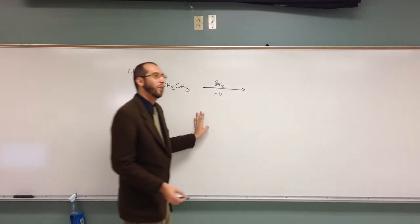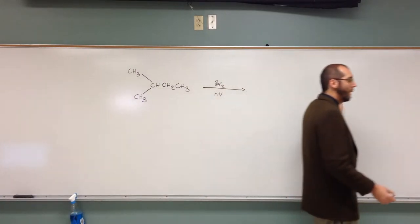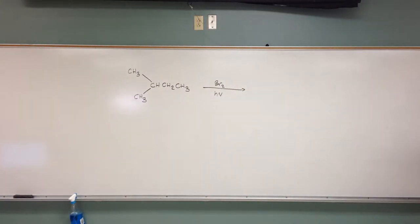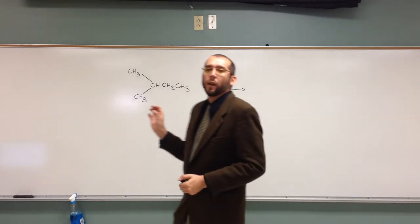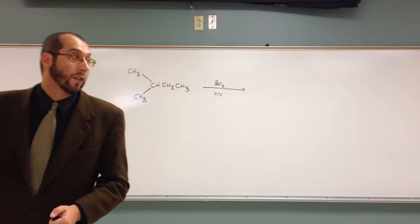A bromination reaction. What kind of mechanism is this going through? A radical reaction mechanism. So that means we've got to find where the most stable radical is going to be.